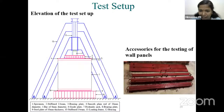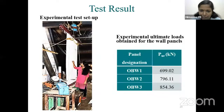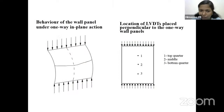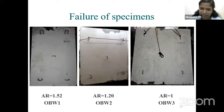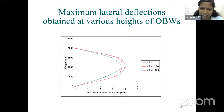The load was applied at an eccentricity to reflect possible eccentric loading in practice. The wall panels were able to take around 850 kN load. Under one-way in-plane action, the panel bends in the uniaxial direction, developing horizontal cracks perpendicular to the direction of loading. LVDTs (Linear Variable Differential Transducers) were provided at various locations to measure deflection at different load intervals.